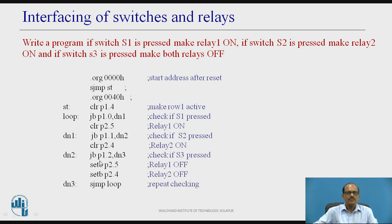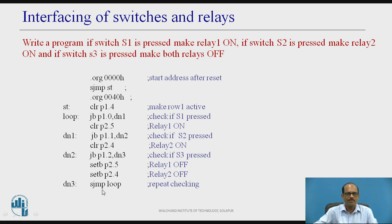Next, check whether S3 is pressed. If S3 is pressed, both relays must be turned off. At DN2: JNB P1.2, DN3 checks if S3 is pressed. If S3 is pressed, SETB P2.5 turns relay 1 off and SETB P2.4 turns relay 2 off — P2.4 and P2.5 are set to 1. At DN3, SJUMP LOOP continuously checks the status of switches S1, S2 and S3.